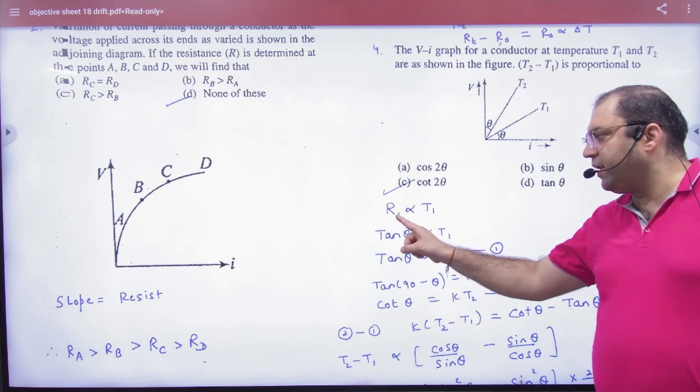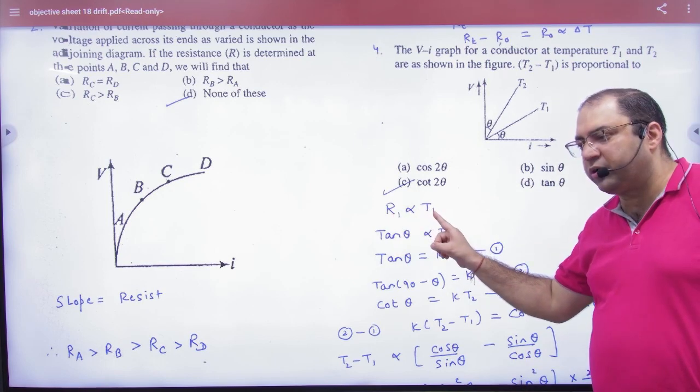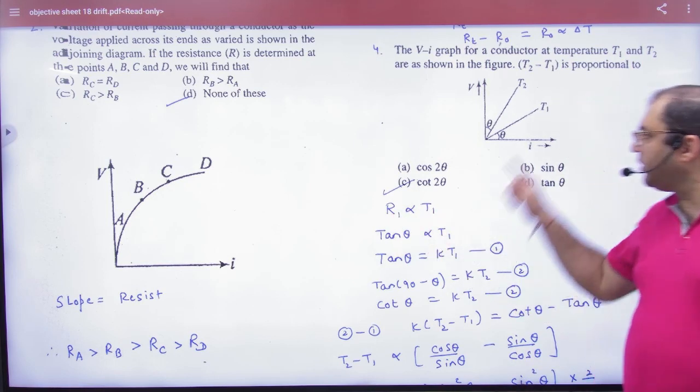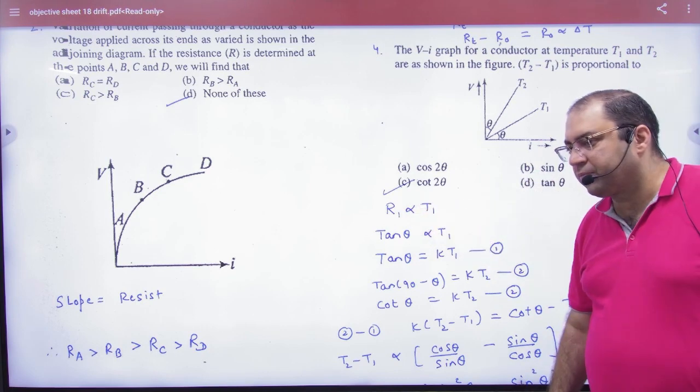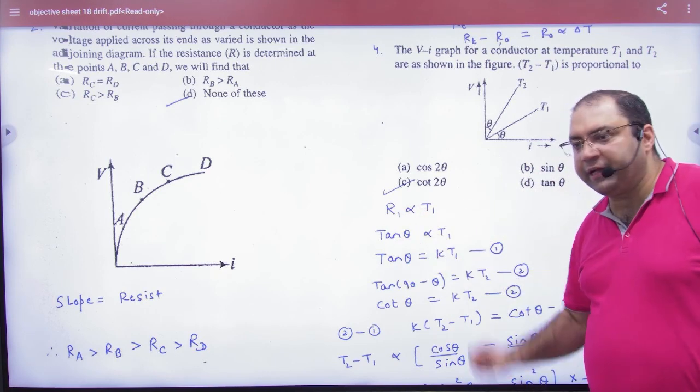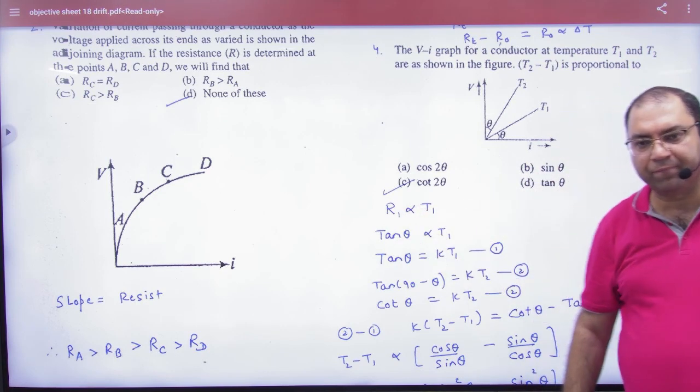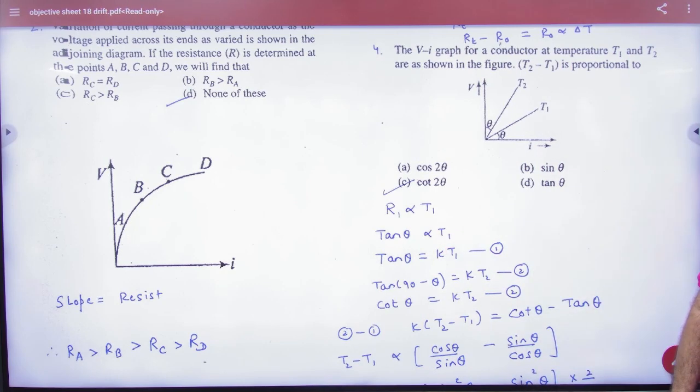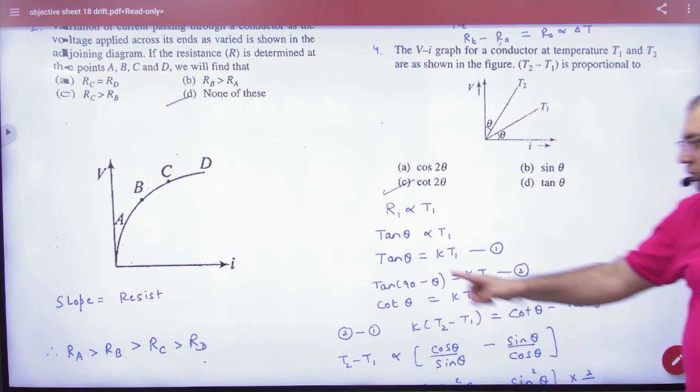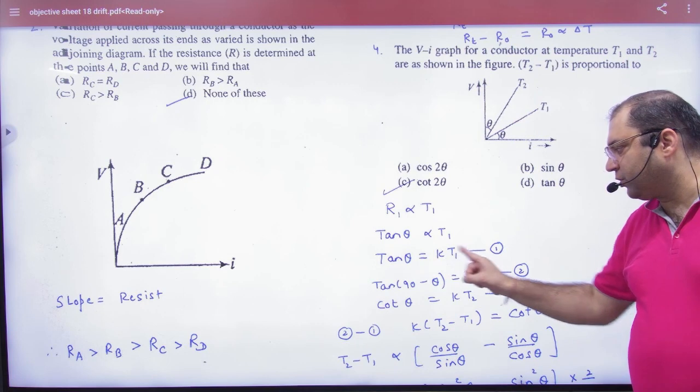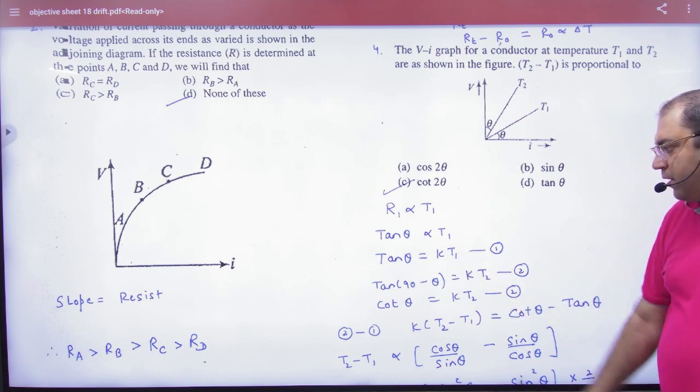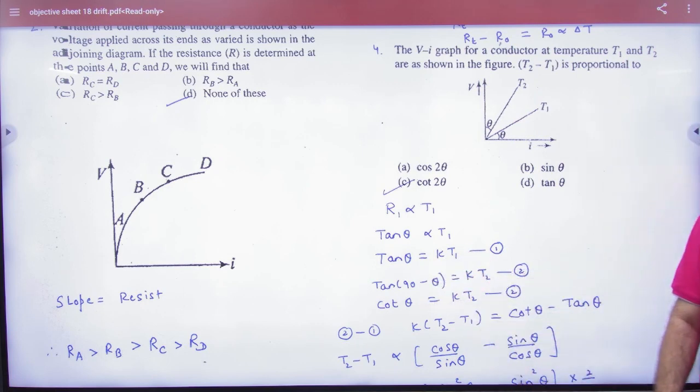Tan theta is slope and slope is resistance. So I can write, in the first case, resistance is proportional to temperature. Imagine T1's temperature is R1. But R1 is tan theta, because it's resistance to tan theta. So this is constant with a value. What is the slope of this line? Tan of 90 minus theta. So in the next line, Tan of 90 minus theta, then what is the temperature? K2. Tan of 90 minus theta is cot theta is K times T2.